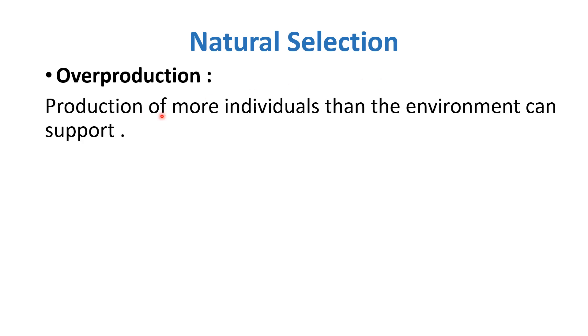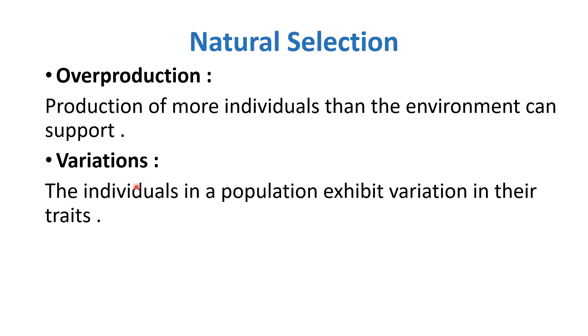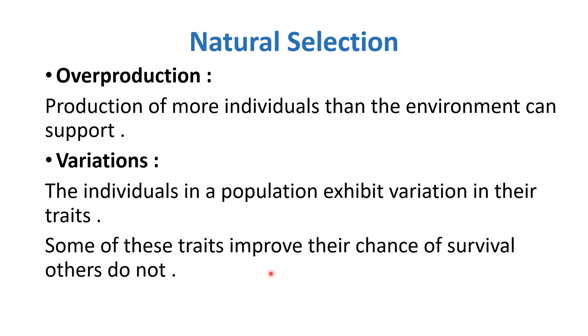Natural selection is the second point represented in the book Origin of Species. In overproduction, more individuals are produced than the environment can support. Regarding variation, individuals in a population exhibit variation in their traits, and there will be some variations that will improve their chance of survival.